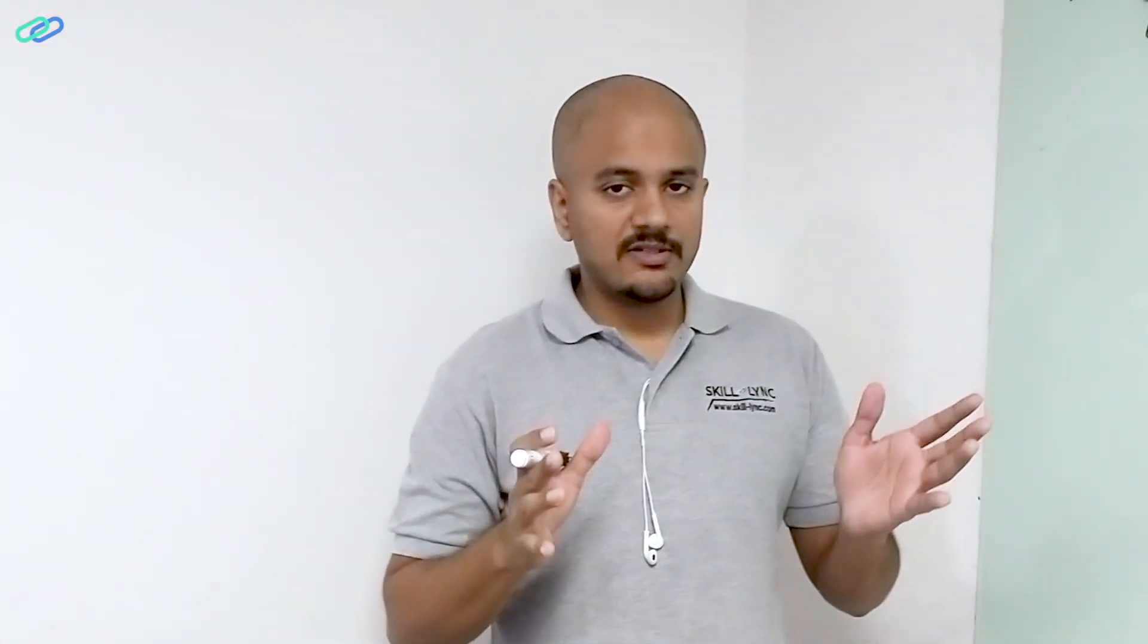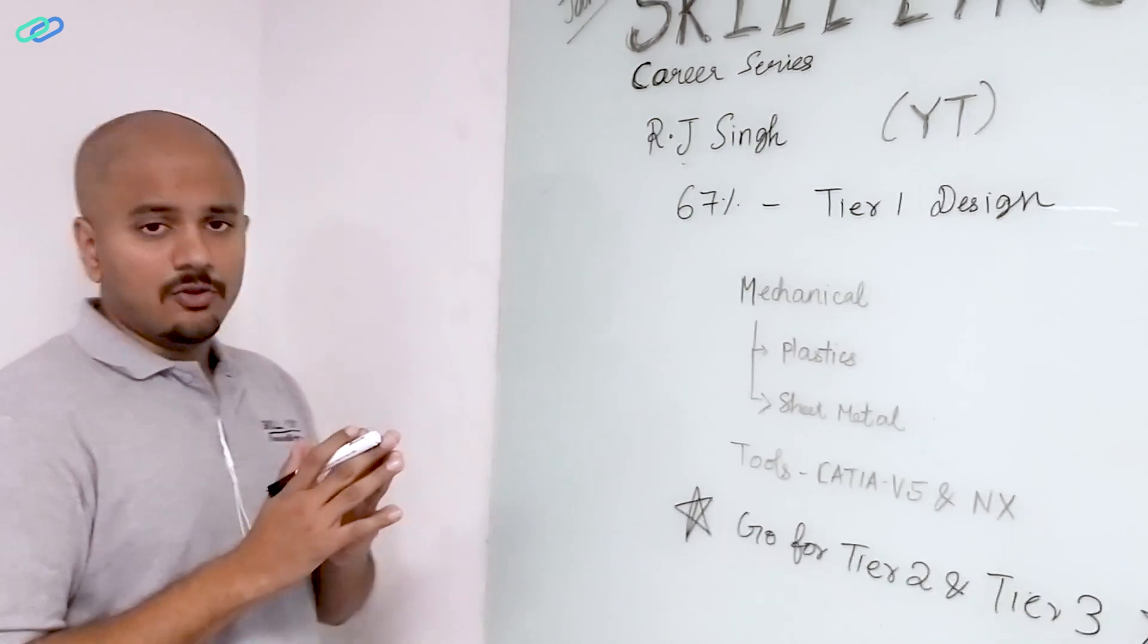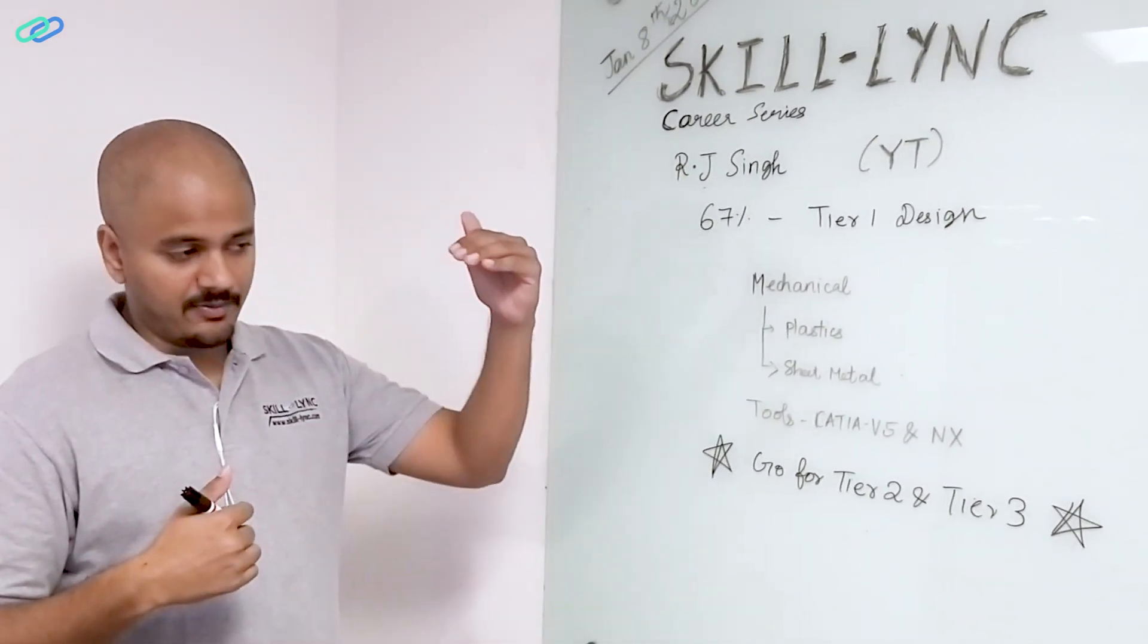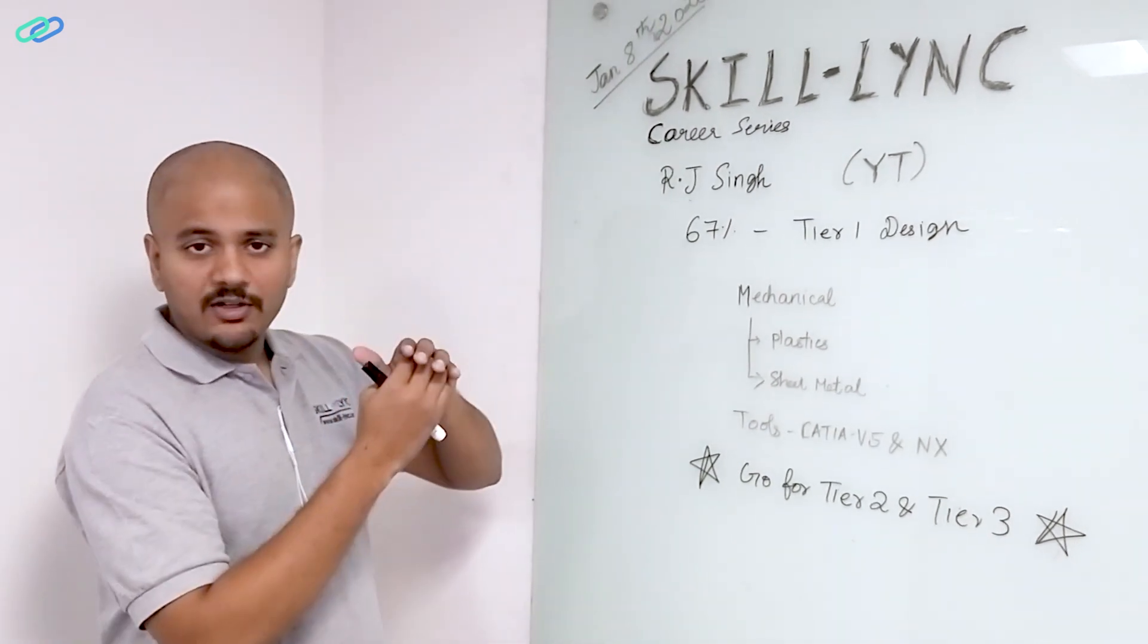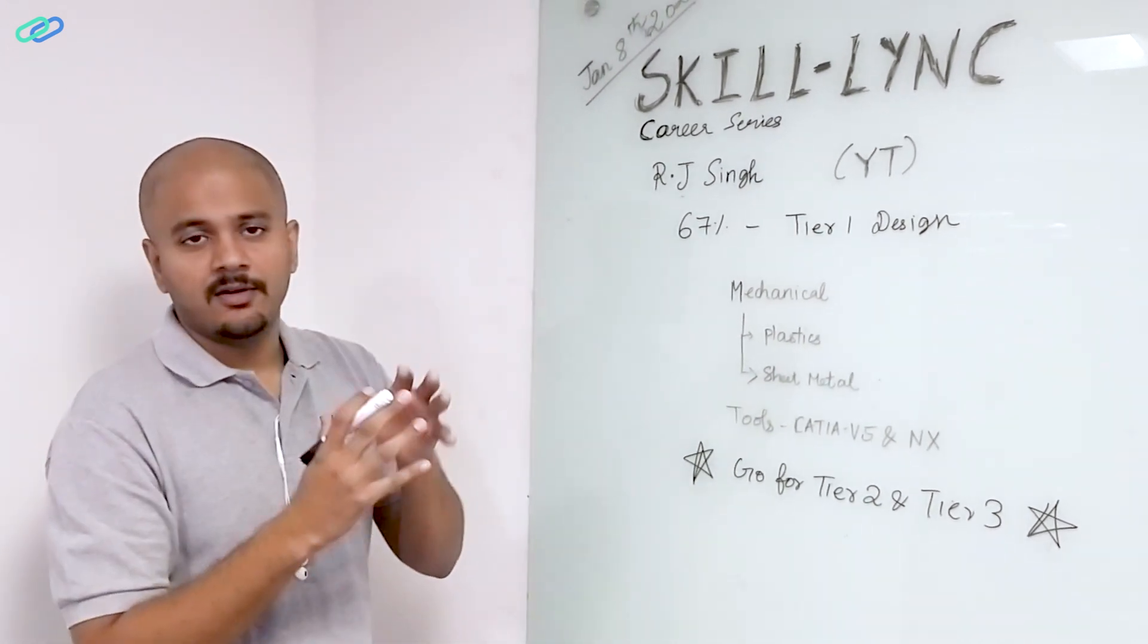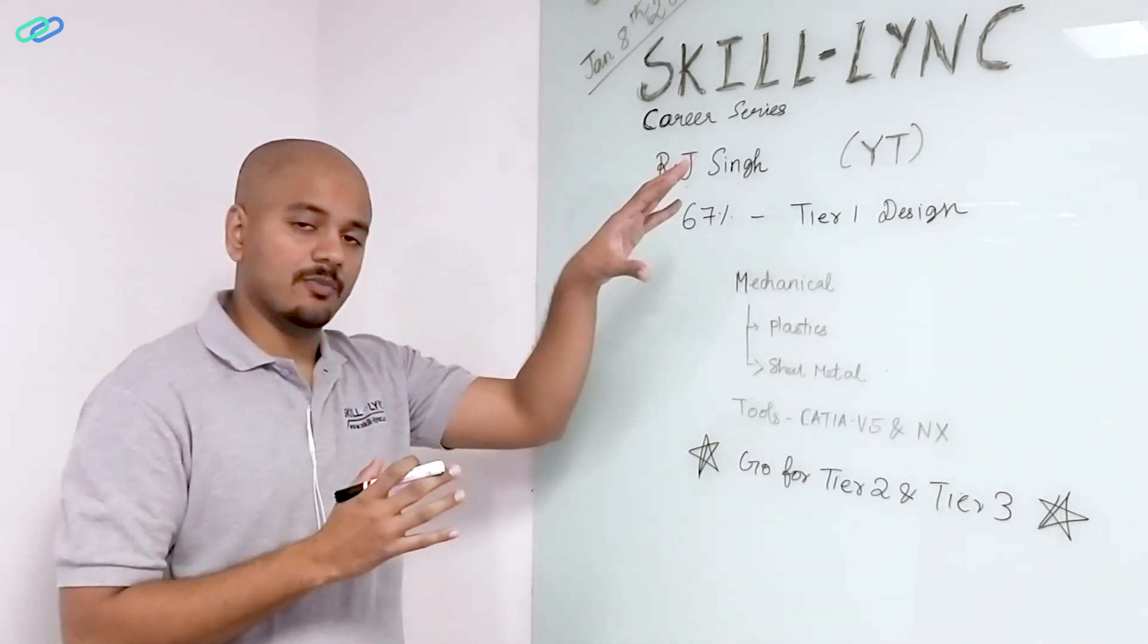Now for those of you who don't know what a tier one supplier or firm is, there is a separate video that we made on that topic. I have put the link in the description box below. But to keep it short, tier one company, tier two company and tier three companies are primary classifications. In general, tier one is much closer to the automaker itself. So for example, if there are four tier one companies, they basically supply components for the automakers.